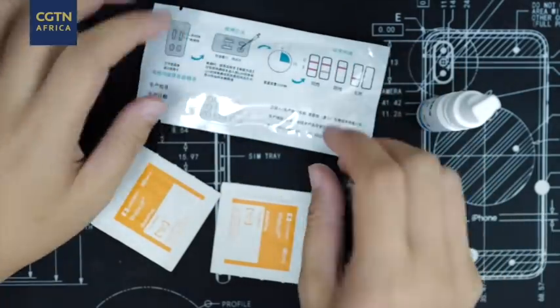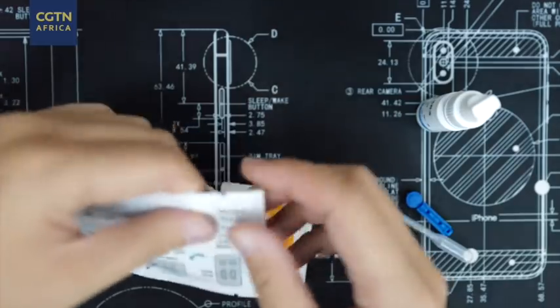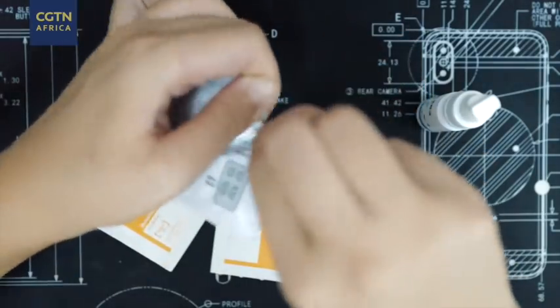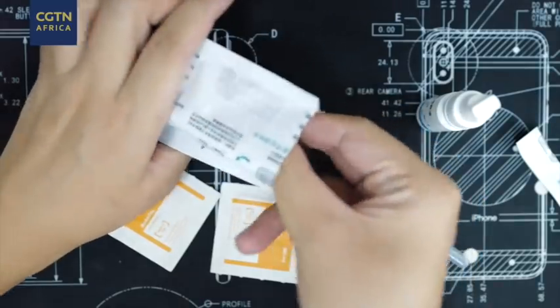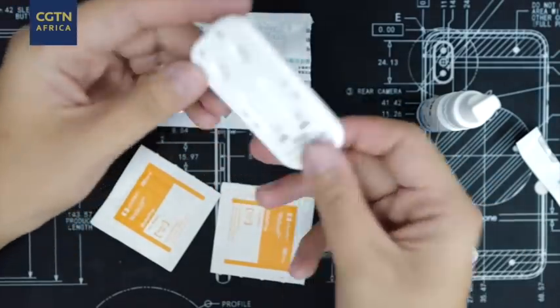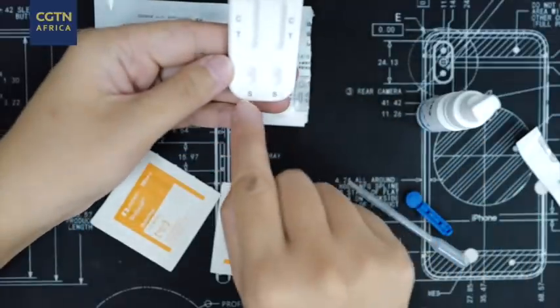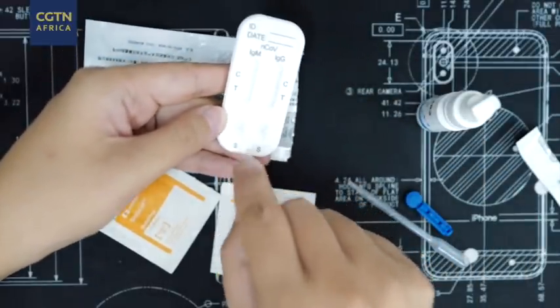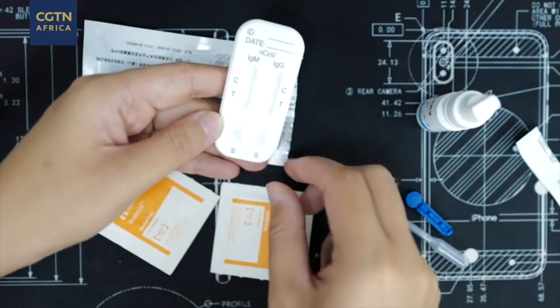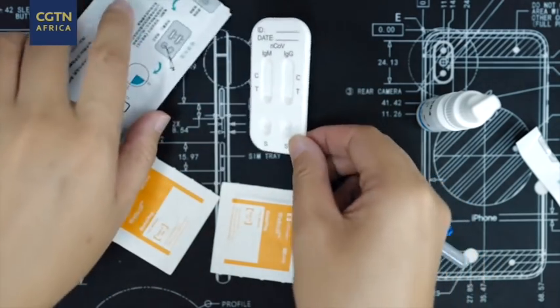Before that, I have already washed my hands. And then we can just open it. After you open it, you should use it as soon as possible. So here is the kit. You can see those are the two places. You need to drop your blood drop and also the diluent.